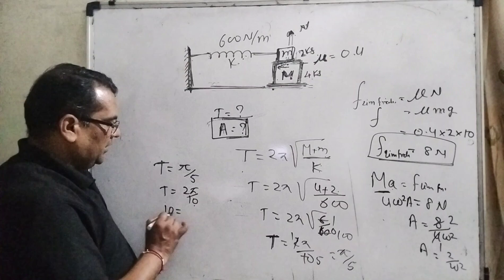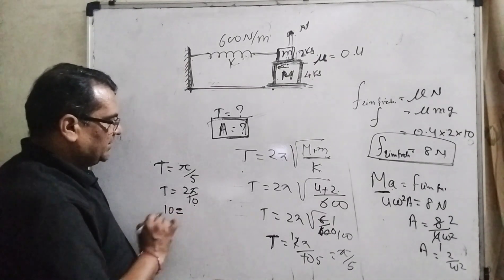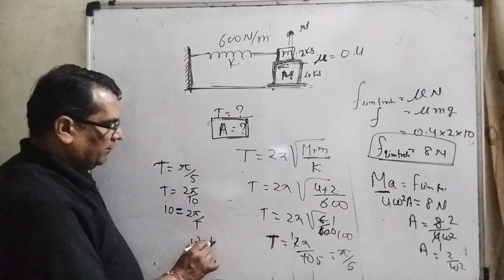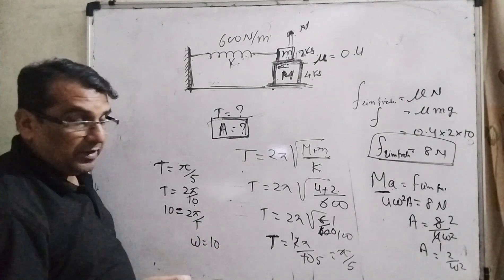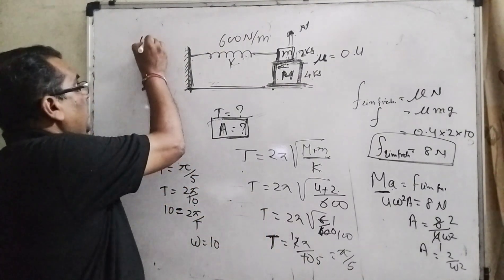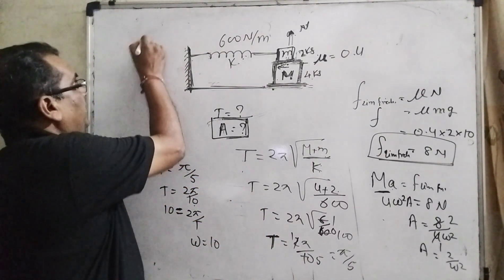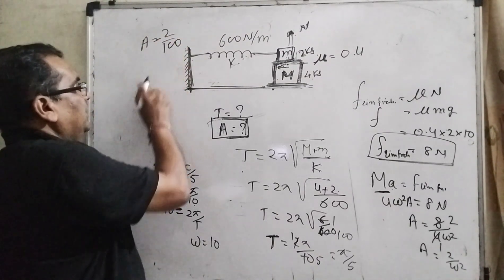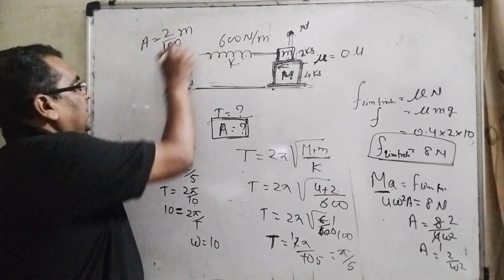Transposing 10 to the left side: 2π/T is omega. So omega = 10. Then omega square = 100.